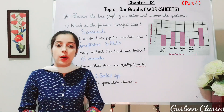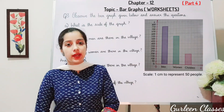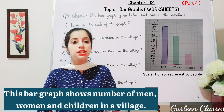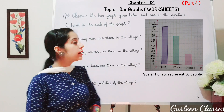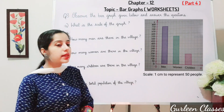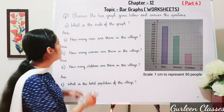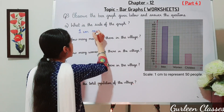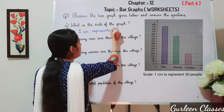I hope students, now you are able to read the bar graph and answer the questions. Question number 3: this bar graph shows the number of men, women and children in a village. Answer the following questions. Part A: what is the scale of the graph? The scale is given that 1 cm represents 50 people.